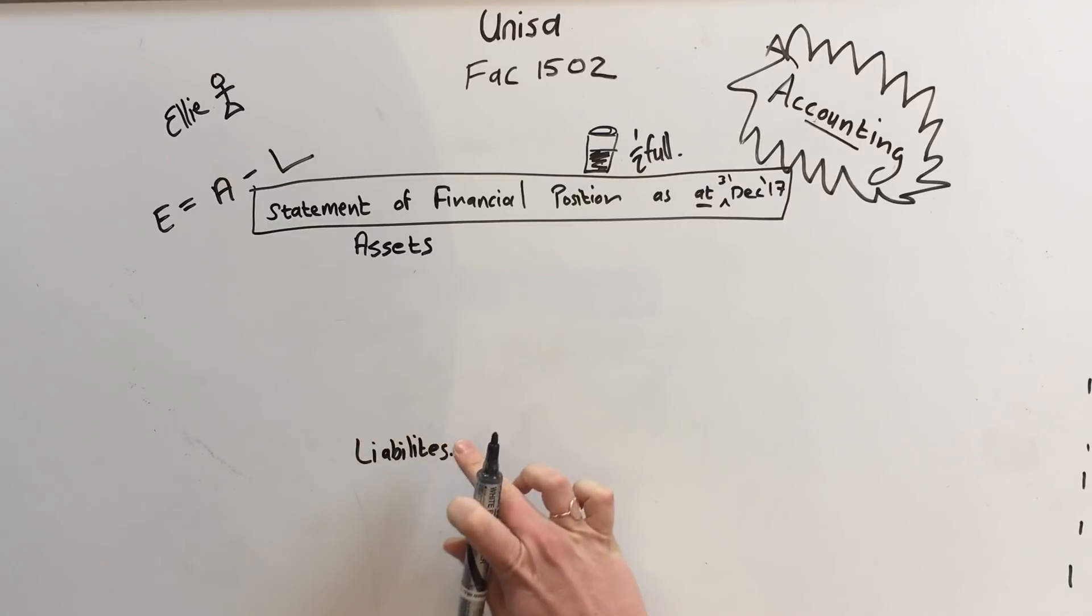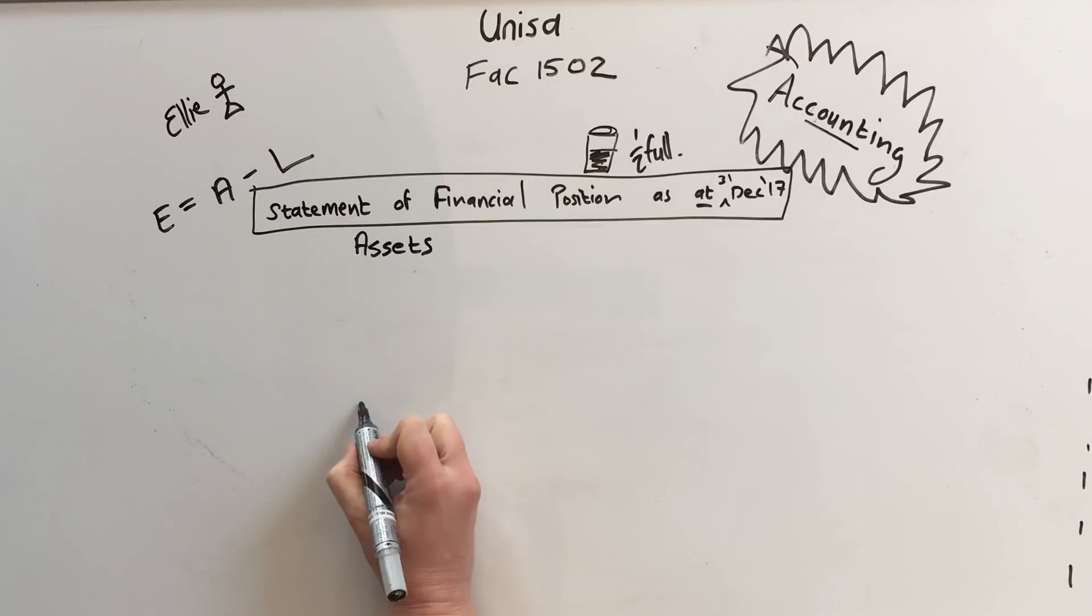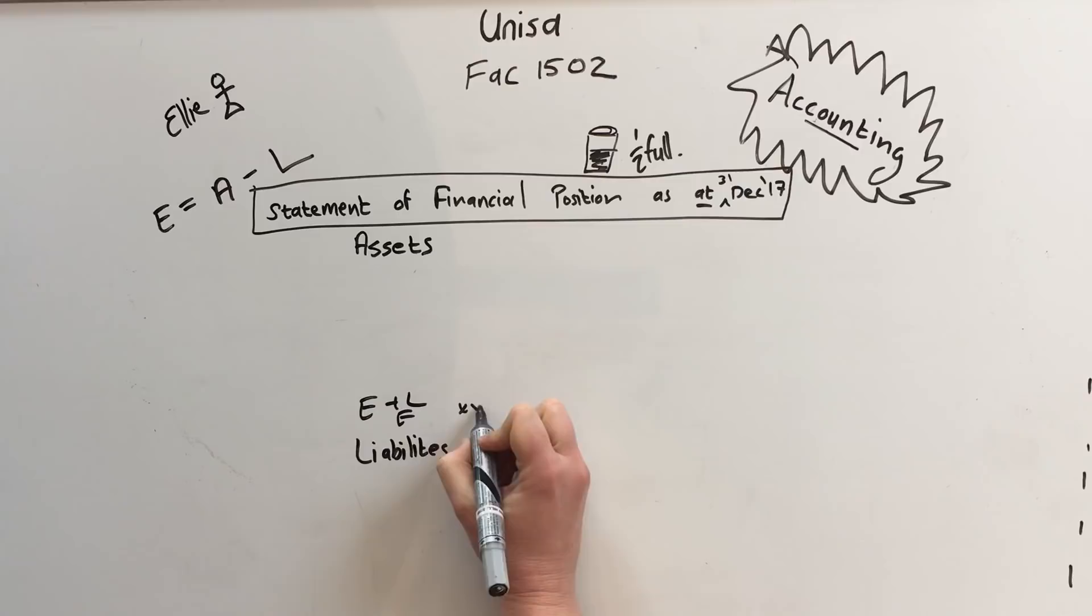Assets at the top, liabilities at the bottom. It will have equity and liabilities. Then it'll have equity first and then your liabilities.